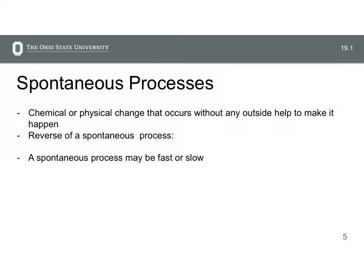That's a quick summary of Chapter 5 enthalpy. Now let's start thinking about spontaneous processes. In our chemical world, a spontaneous process occurs without any outside help to make it happen. The reverse of a spontaneous process is a non-spontaneous process — if a reaction occurs spontaneously in the forward direction, the reverse reaction will be non-spontaneous.